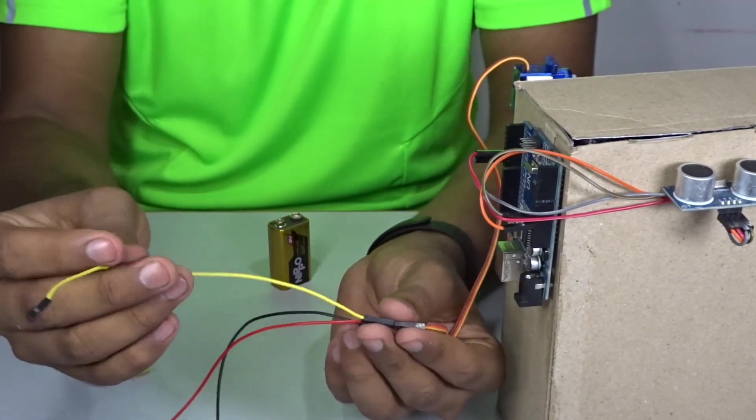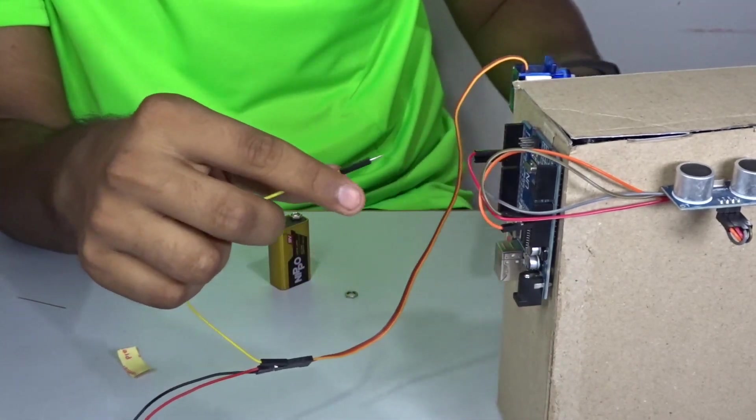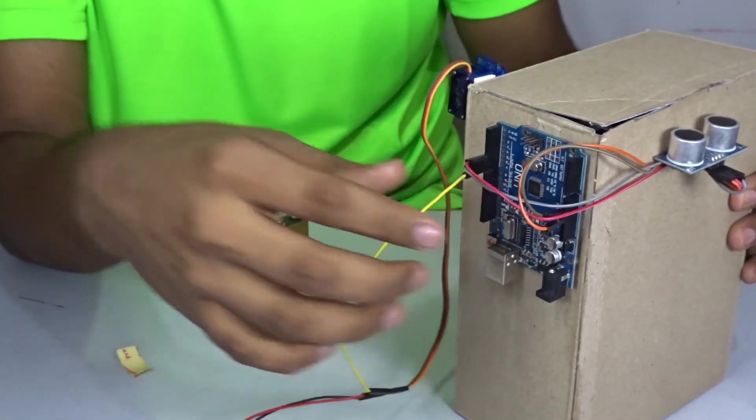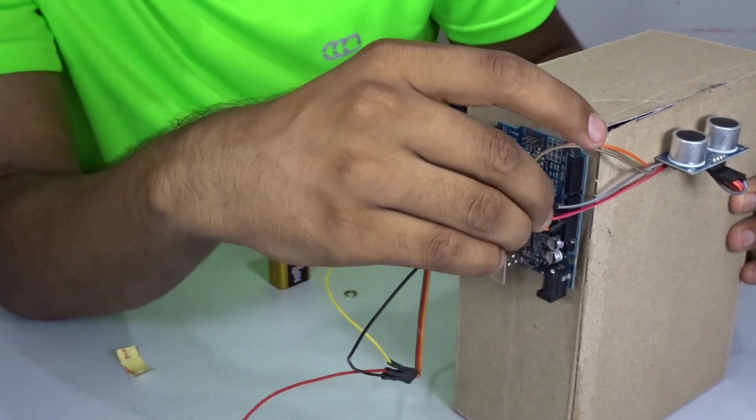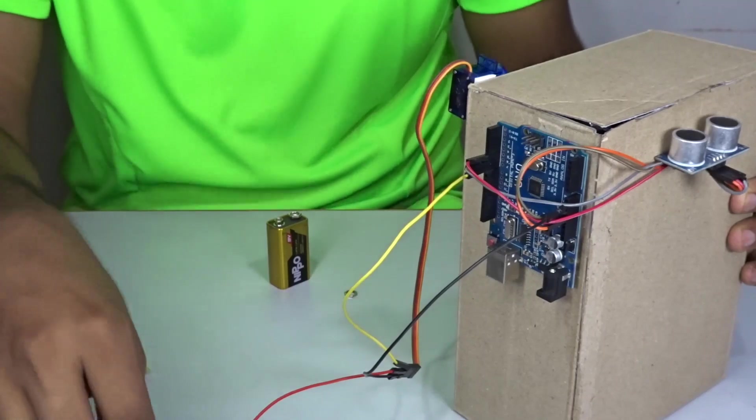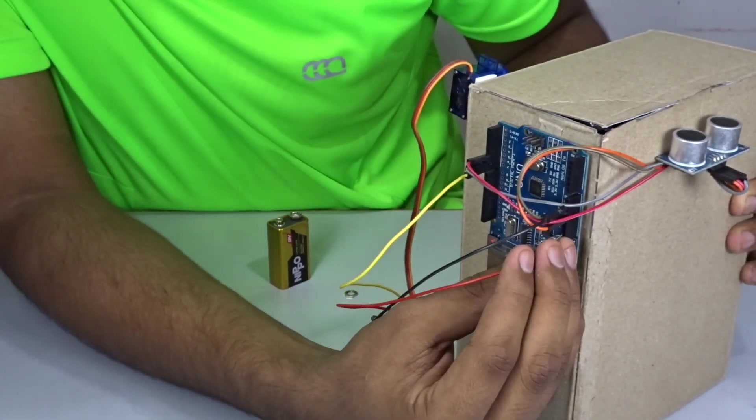So now the yellow becomes the signal which goes to Arduino pin 7. And the black goes to the ground. And the red goes to the plus 5 volts.